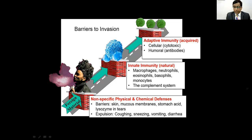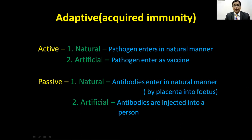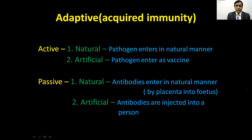Next is adaptive immunity, also called acquired immunity. It is divided into active immunity and passive immunity. Natural active immunity is when a pathogen enters the body naturally — causing pneumonia, chickenpox, COVID, or other infections — and the body builds natural immunity. Artificial active immunity is when a vaccine, which is a pathogen like the polio vaccine or COVID vaccine, is given. This is active artificial immunity.